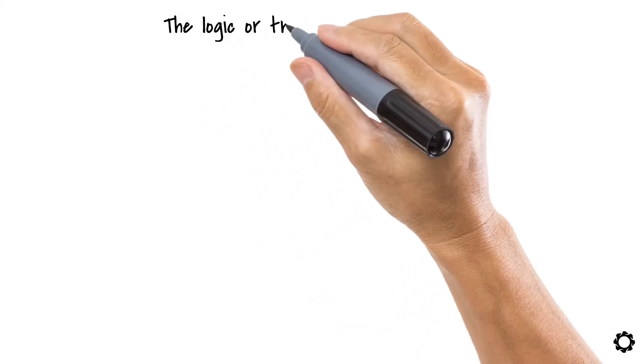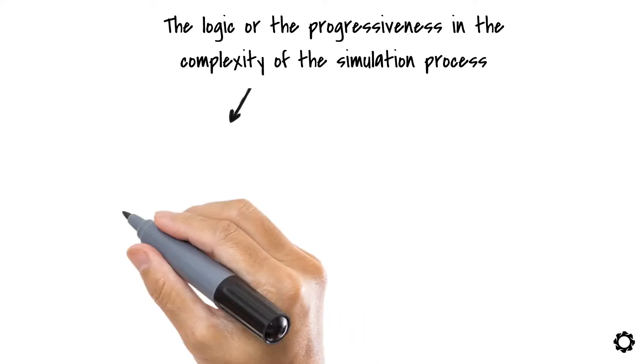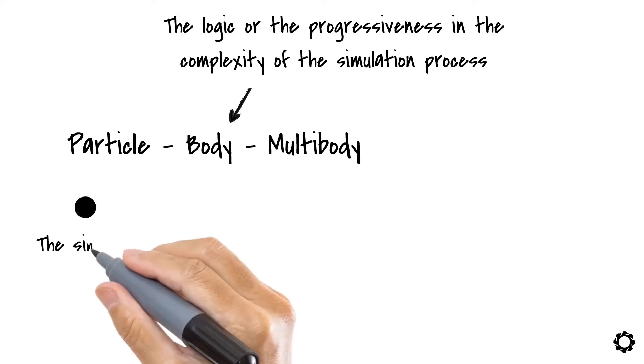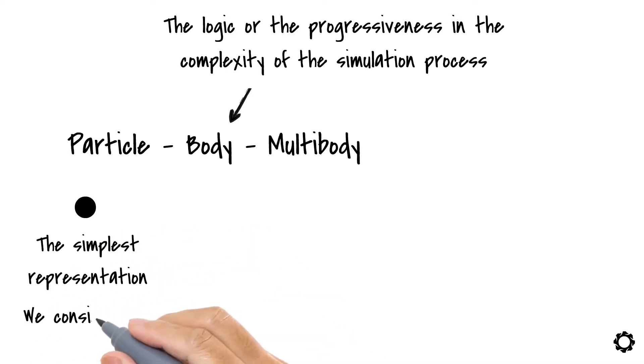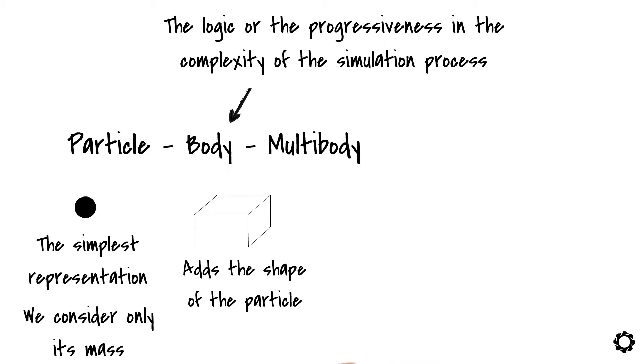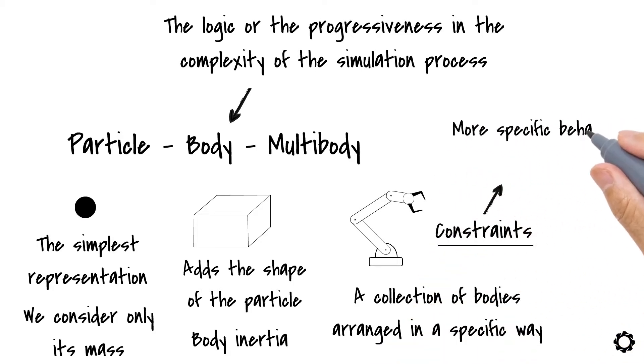I hope you see the logic or the progressiveness in the complexity of the simulation process looking from the point of view of the particle, body, multi-body. We saw that a particle is the simplest representation of a mechanical system where we consider only its mass. A body builds on top of the particle concept and adds the shape of the particle which introduced the concept of body inertia. Then we finalize with the concept of a multi-body system, which we defined as a collection of bodies arranged in a specific way and attached to another with constraints with the sole purpose of accomplishing an even more specific behavior or movement pattern.